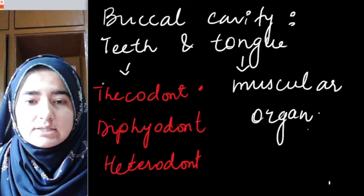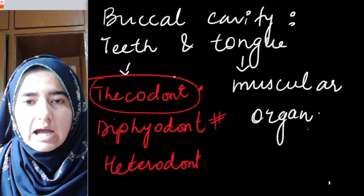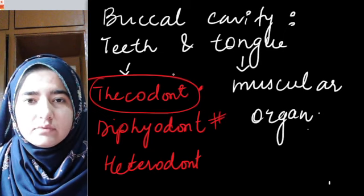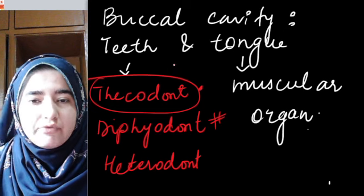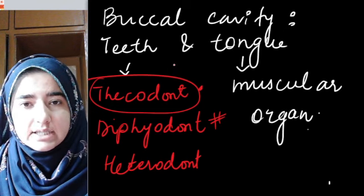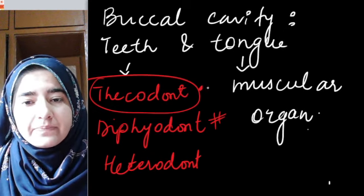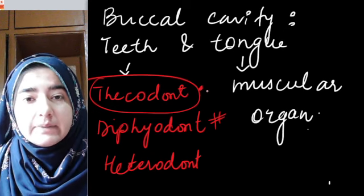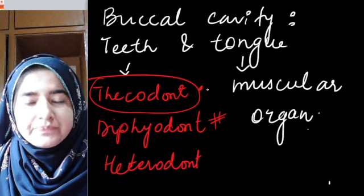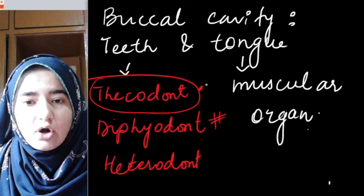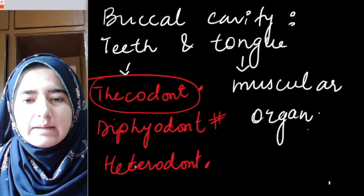Thecodont means attachment of teeth with the socket of the jaw bone. Diphyodont means we have two sets of teeth in our lifespan: temporary or deciduous teeth (milk teeth), and then the permanent or adult teeth which come around age 10–12. Heterodont dentition means having different types of teeth.